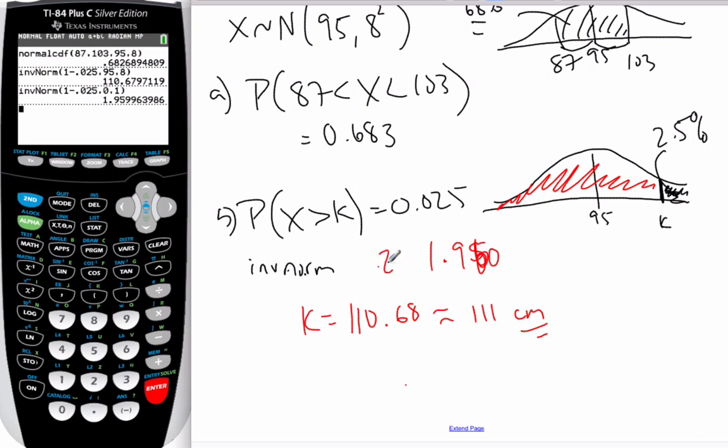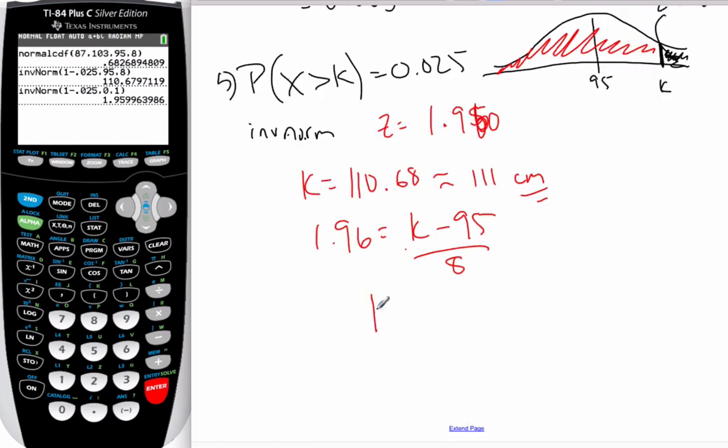This here is my Z score from the standardized normal. And so, if I went 1.96 is equal to K minus 95 divided by 8. This will also then produce a value of 111 centimeters. So, if you have to find the Z score, you can still also do that with inverse normal.